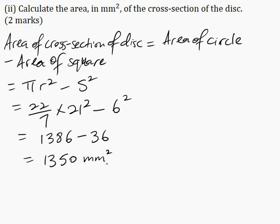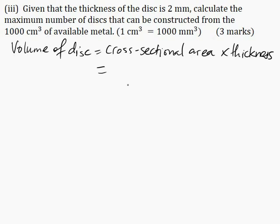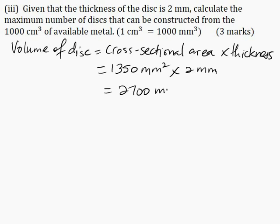Substituting: volume equals 1350 mm² multiplied by 2 mm thickness, which gives 2700 mm³.